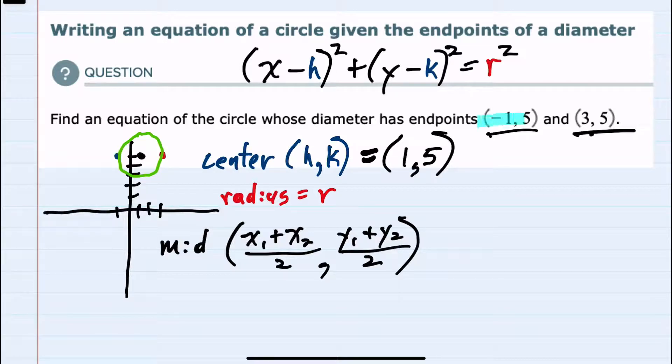And again, if that were not obvious, you could take the x1 values and y1 values and plug those in, and you could take the x2 and y2 values and plug those in, and we would get the center, 1, 5.